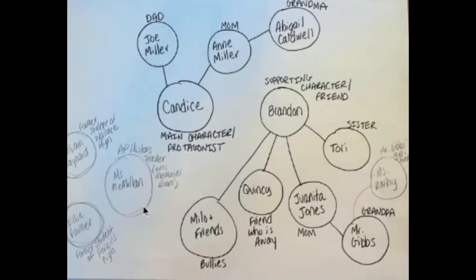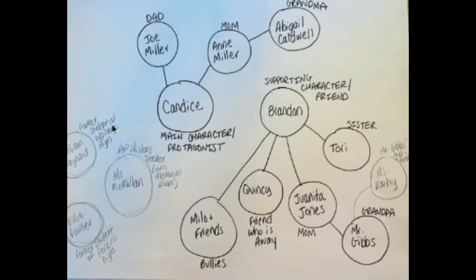Some other minor characters important to this part of the reading: we have Miss McMillan, who is the AP history teacher and also runs the memorial room at the school — she helps them find yearbooks and things. We have Ellie Farmer, who is a former student of Perkins High. And then we have William Lainard, who is a former student of Wallace High that we meet near the end of this section.